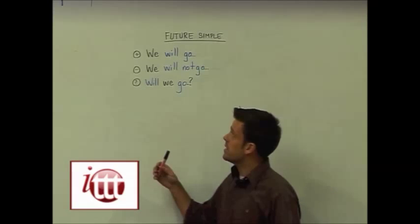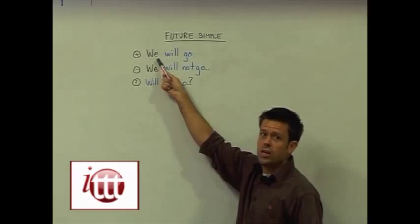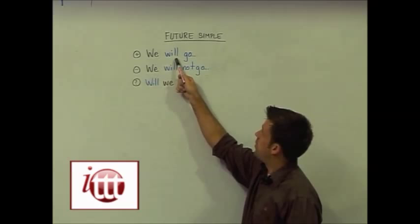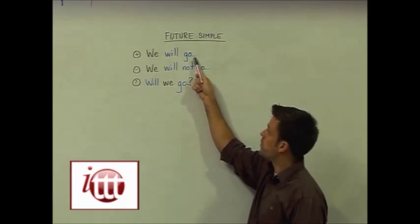So, in order to form these, at least for the positives, we use our subject first. It could be any subject you like. Here we're using 'we,' followed by the word 'will,' and our main verb, 'go.' We will go.